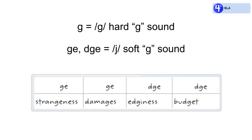Then we have two examples of DGE. The first is edginess. Now notice that this time we don't have DGE, we have DGI. This is because we've taken the word edge and added the suffix -ness. When we add the suffix -ness, the E changes into an I. However, the DGE sound remains. So this word is edginess.